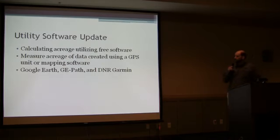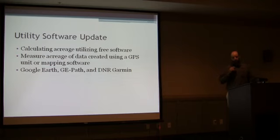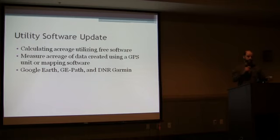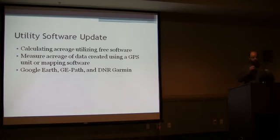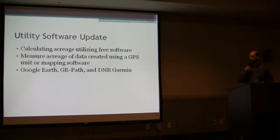I want to mention quickly that there is a utility I've received a lot of questions about. Many people doing basic mapping would like to determine acreage using Google Earth, which is free. There is a Google Earth Pro that will tell you acreage, but the free version does not. However, there's a utility — which we used briefly yesterday — that lets you process your data and display it in Google Earth showing the acreage of your property. DNR Garmin is also just a nice GPS transfer utility.